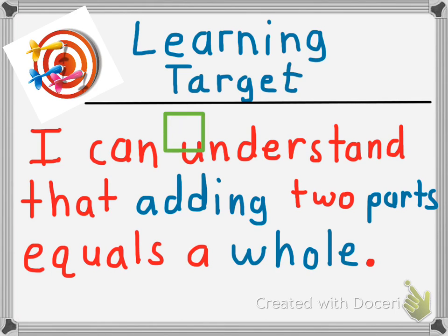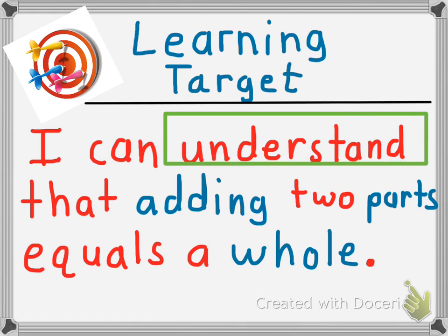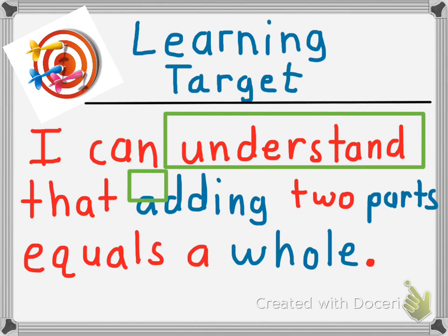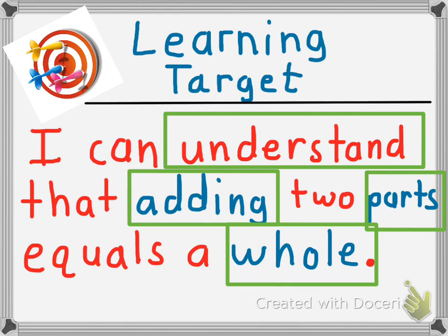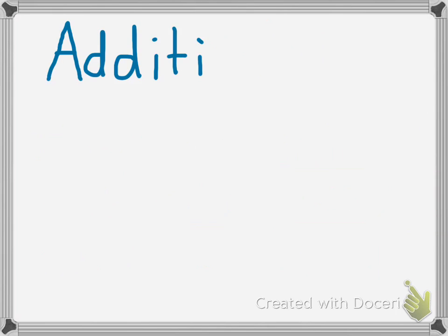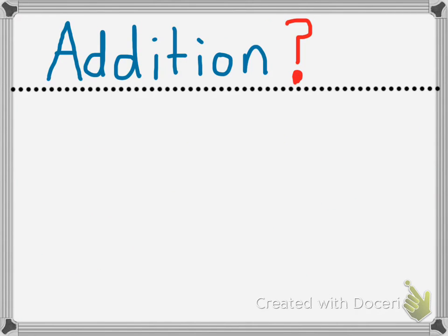Again, we want to make sure that we understand that when we add — when we're adding and we add parts — they're going to make a whole or a total. Let's take a look at an example and think about what is addition. Addition is when we have two or more groups and we're joining them together to make a total.